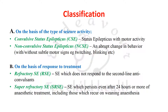Status epilepticus is classified based on seizure activity as either convulsive or non-convulsive. Convulsive status epilepticus (CSE) is status epilepticus with motor activity. Non-convulsive status epilepticus (NCSE) is an abrupt change in behavior with or without subtle motor signs, such as twitching or blinking. On the basis of response to treatment, it can be refractory or super-refractory.